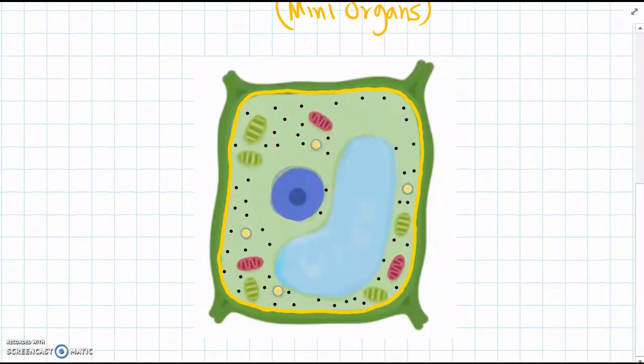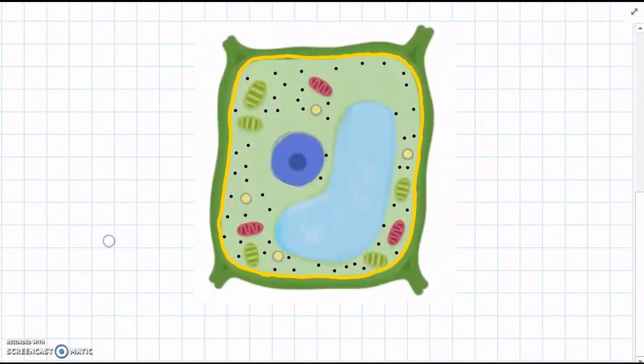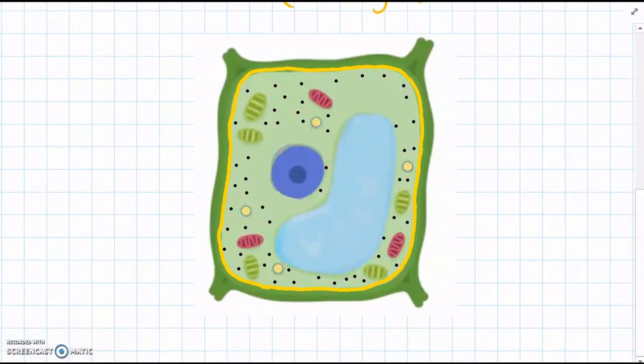So here is a simple diagram of a cell and we're going to look at the main or the most important organelles. There are lots of different ones that have been discovered, but we'll start with the basic organelles.